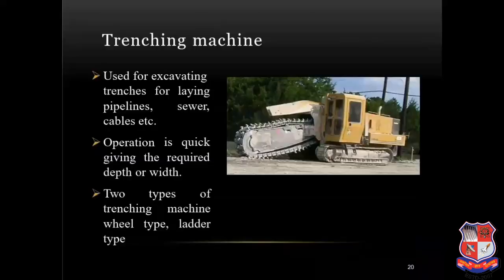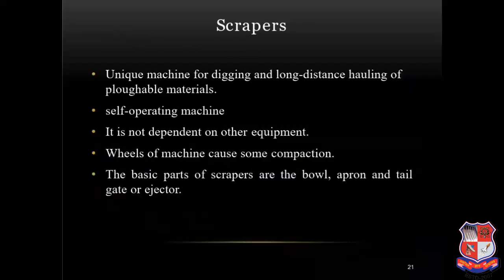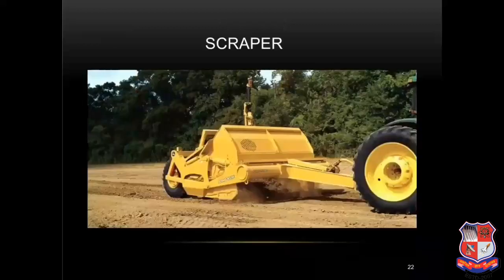The trenching machine is used for excavating trenches for laying pipelines, sewers, cables, etc. It operates quickly, giving the required depth or width. The two types are wheel type and ladder type. Scrapers are a unique machine for digging and long distance hauling of pluggable materials. It is a self-operating machine, not dependent on any other equipment. The wheels of the machine cause some compaction. The basic parts of a scraper are the bowl, apron and tailgate or ejector.